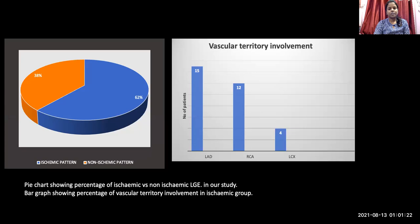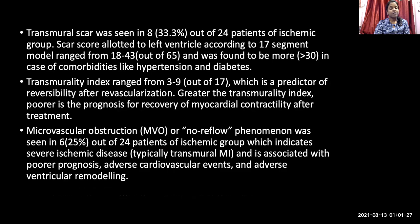The most common vascular territory involved was the LAD. Transmural scar was seen in 8 out of 24 patients in the ischemic group. The SCAR score allotted to the left ventricle according to the 17-segment model ranged from 18 to 43 and was found to be higher in cases with comorbidities like hypertension and diabetes. The transmurality index ranged from 3 to 9, which is a predictor of reversibility after revascularization.